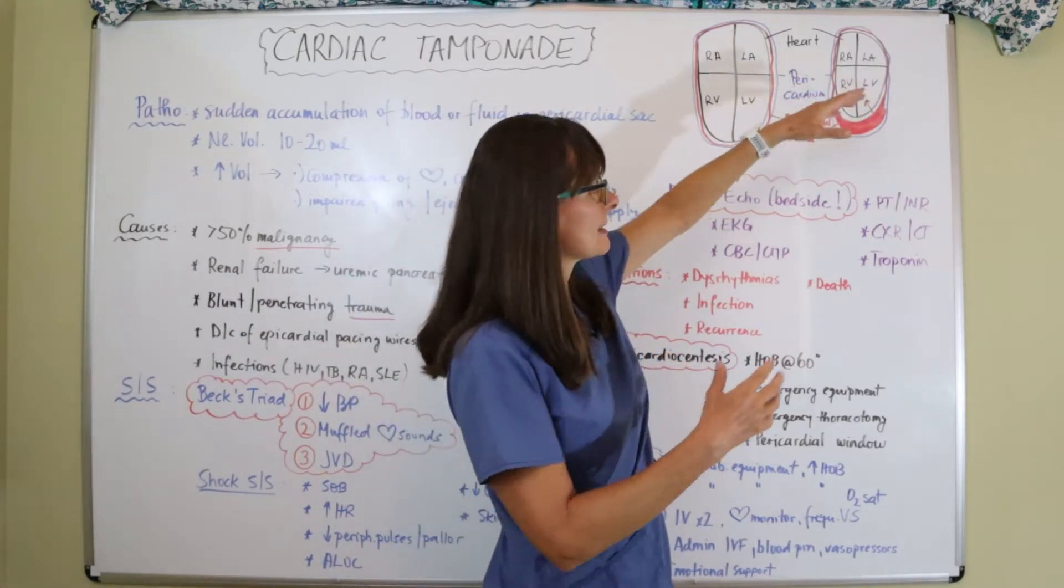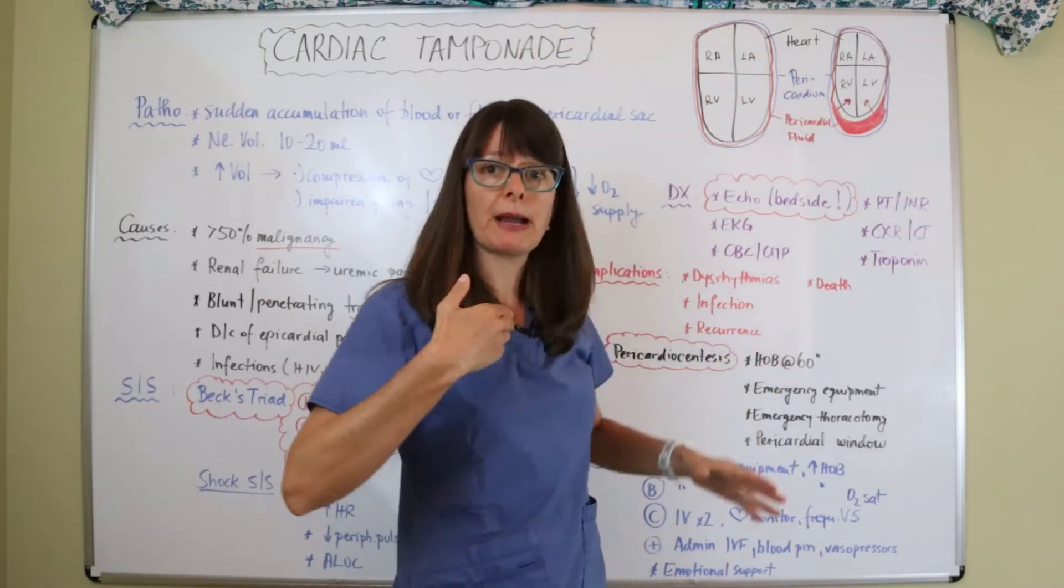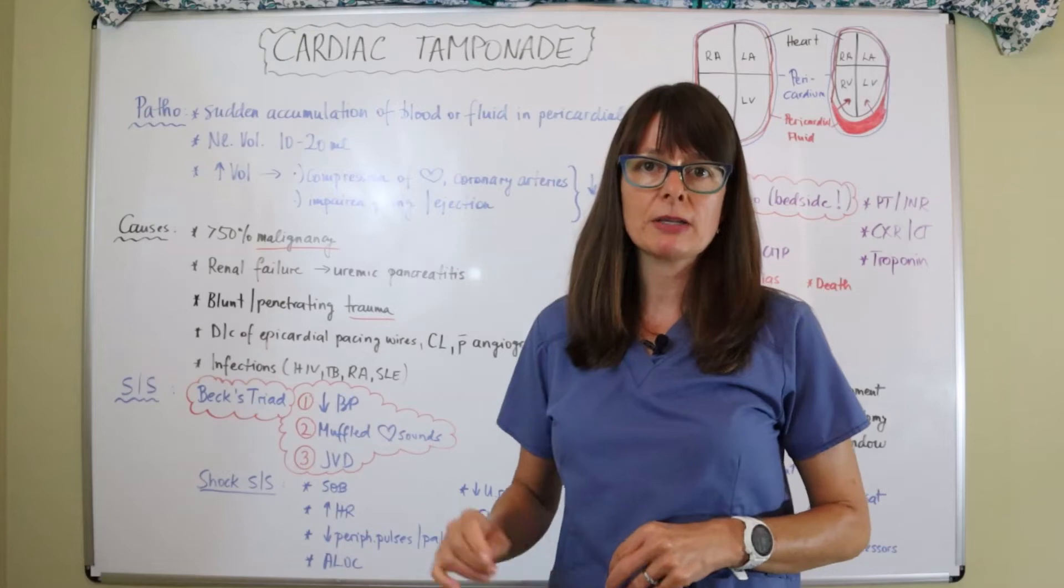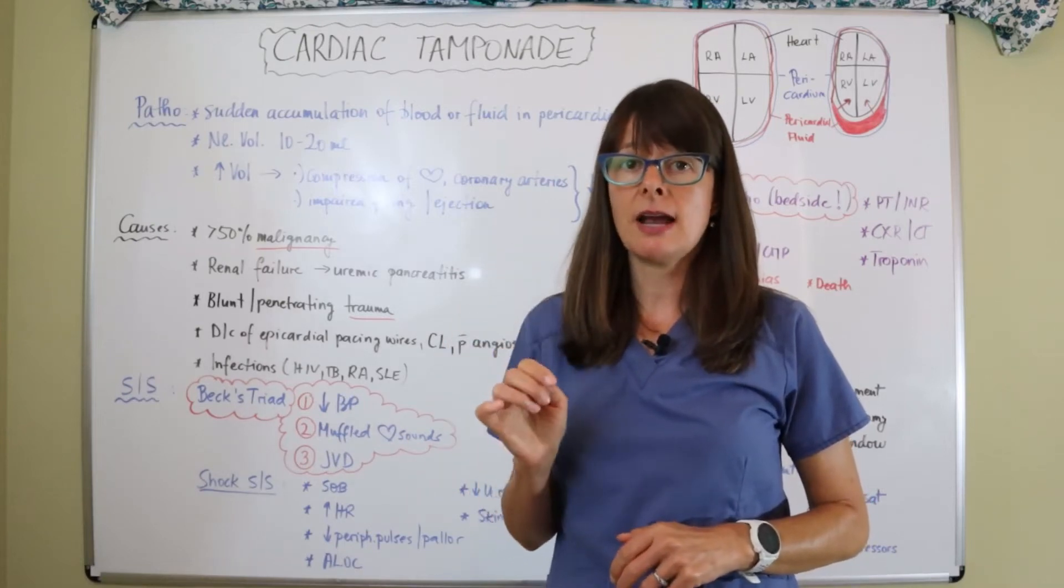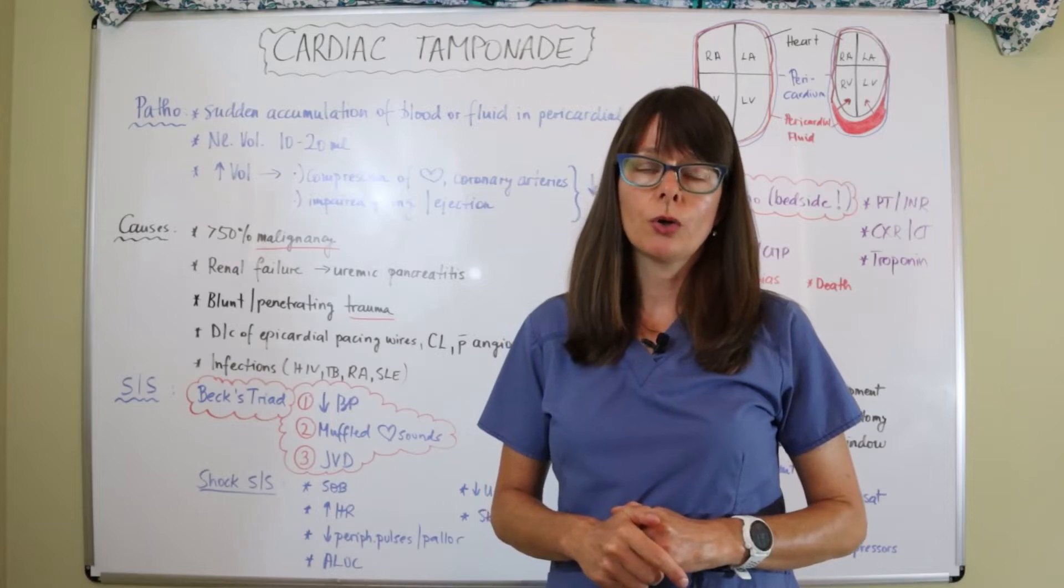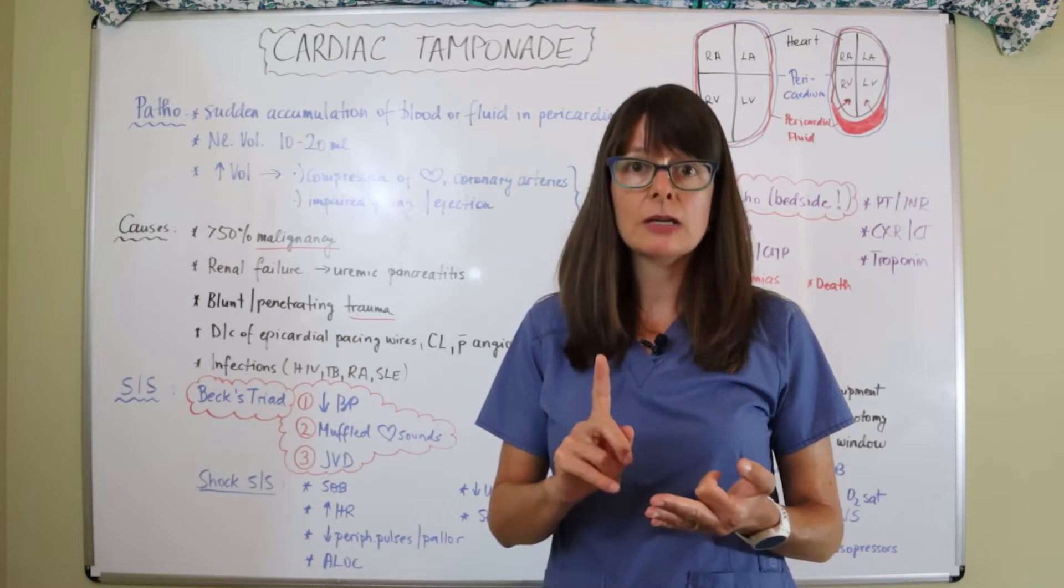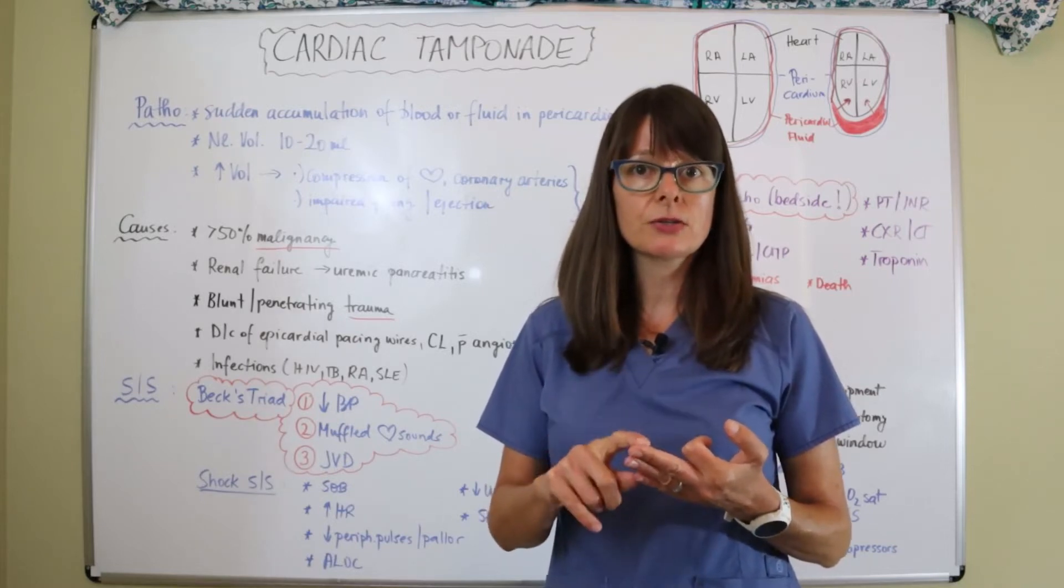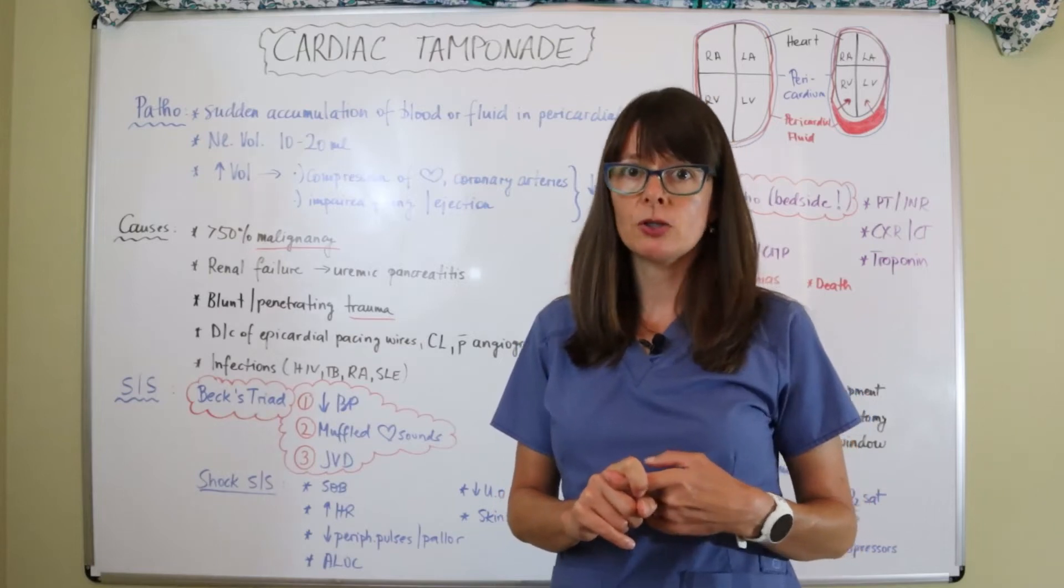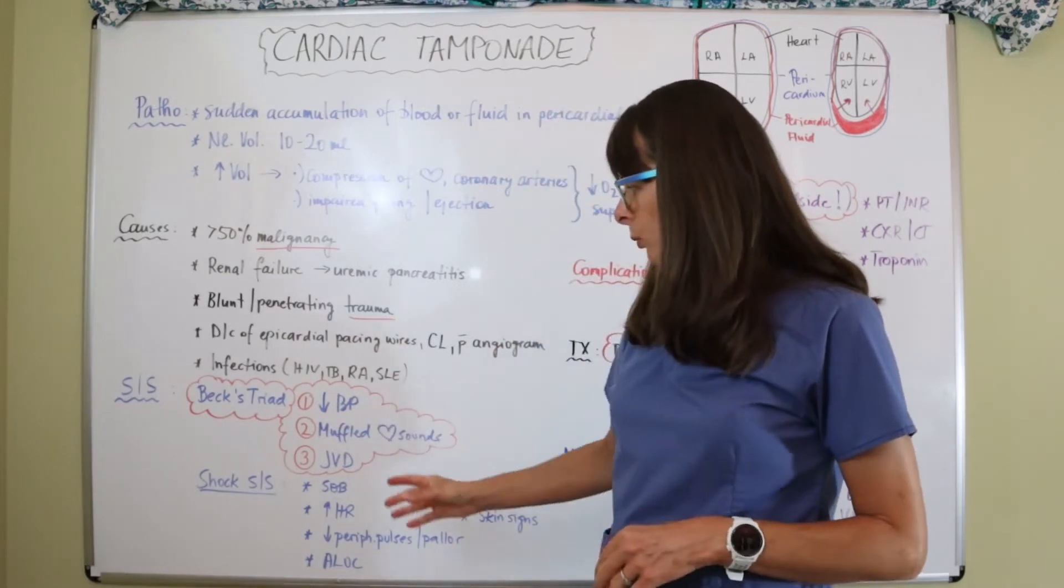Because the fluid backs up, because the heart can't fill appropriately, it'll cause that back up and you'll see the jugular venous distension. So these three, Beck's triad, are the telltale signs for cardiac tamponade, and this is something that often will occur on NCLEX exams, on class exams for critical care, as well as your CCRN and your certified nursing examination or even your critical care nursing specialty examination.